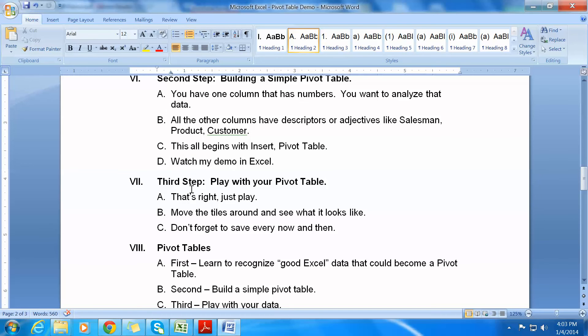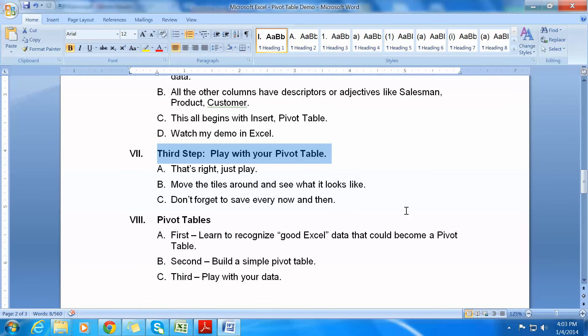Now, the second step is that you've built a simple pivot table. And we've talked about this, having one column, all columns have descriptors. This all began with insert pivot table, and you've seen the demo. Now, what happens is, this is really kind of the hard part for beginners, I think, just one of several hard parts with pivot tables, is that they have to play with their pivot table to make it look nice. I think one of the difficulties in building pivot tables for others is that your manager may ask you to build a pivot table, but really, he or she doesn't know what they want because they don't know pivot tables.